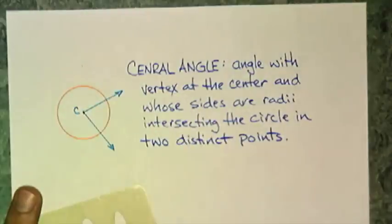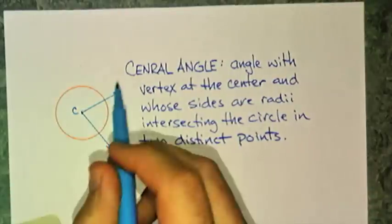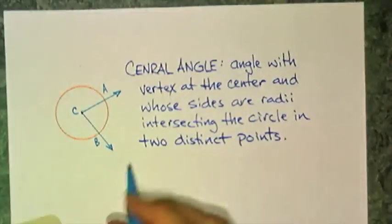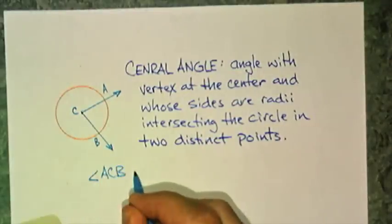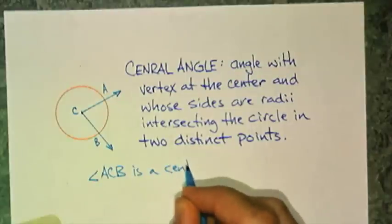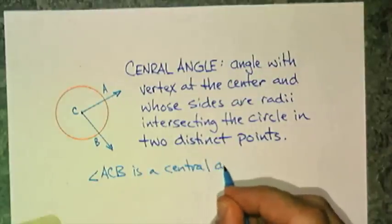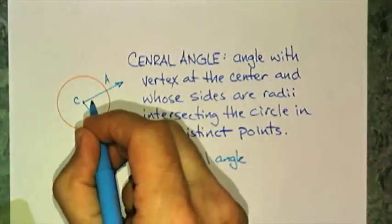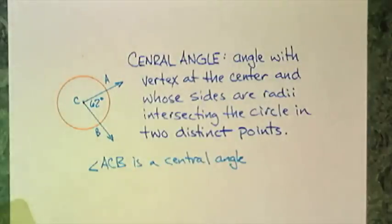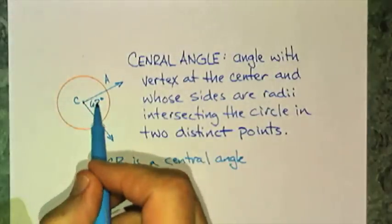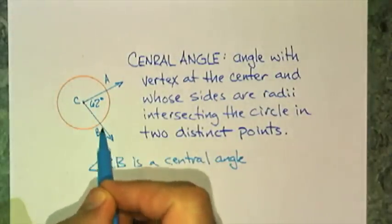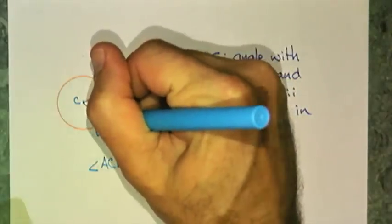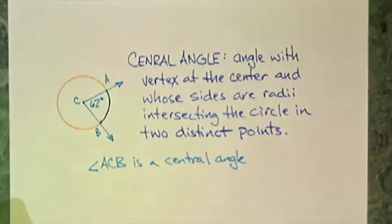Let's call this circle C. And there is my central angle. So angle ACB is a central angle. And I can measure angles, just like before. I'll say that that looks like 62 degrees.